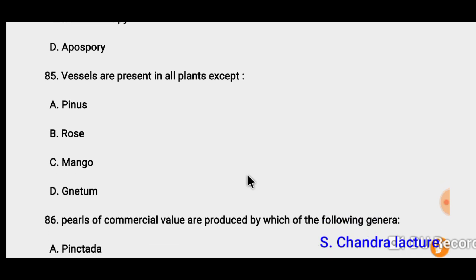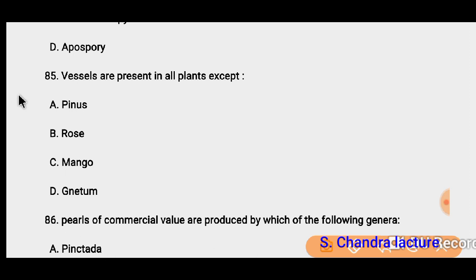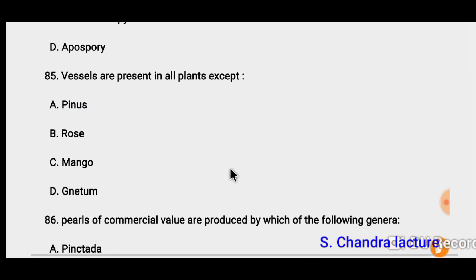Question 85: Vessels are present in all plants except. Vessels are typically found in flowering plants (angiosperms) but absent in most gymnosperms. For example, in Pinus, vessels are generally not found.